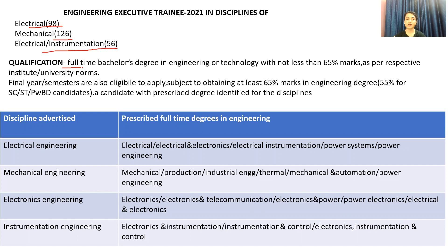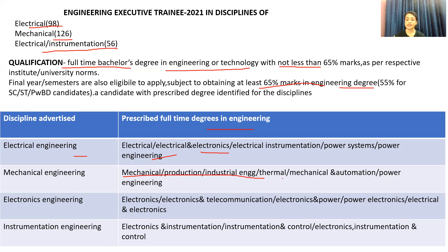Let's talk about the qualification. There is a full-time bachelor degree in engineering and technology with not less than 65% marks. Final year and final semester students can also apply. They are also eligible to apply subject to obtaining at least 65% marks in engineering degree. Disciplines include electrical and electronics, mechanical production, industrial engineering, thermal, mechanical and automation, and power engineering.